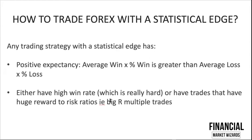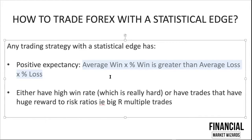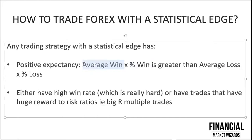What is positive expectancy? Positive expectancy can be defined by this equation: your average win times your percentage win rate must be greater than your average loss times your percentage loss rate. Through this equation, you can see there are only two ways to be a profitable trader. Number one is that you have a high win rate, which is very hard — most top traders only average between 40 to 50 percent. The second way is to have trades with huge reward-to-risk ratios, meaning your average win is greater than your average loss. This is also known as big R-multiple trades.